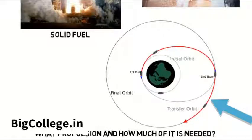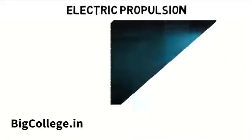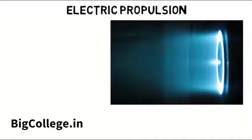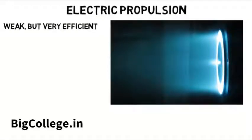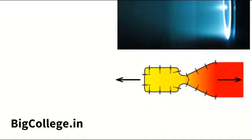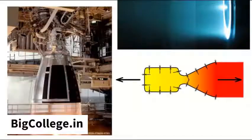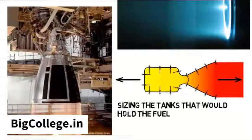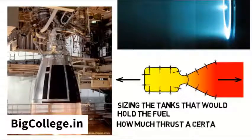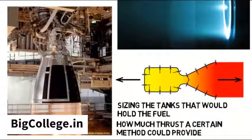Or in deep space, one method you could use is electric propulsion, which is weak but very efficient. Other details would include shaping and determining the material for the nozzle, sizing the tanks that would hold the fuel, and figuring out how much thrust a certain method could provide.